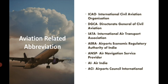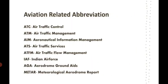ANSP is Air Navigation Service Provider — meaning who is providing the navigation and communication service in India. That is the Airports Authority of India. AI is Air India — the national carrier of India — which is the name of the operator. ACI is Airports Council International, which you can look up as it is not that important for the exam. ATC is Air Traffic Control — this is very important, as surprisingly many of us do not know about it.